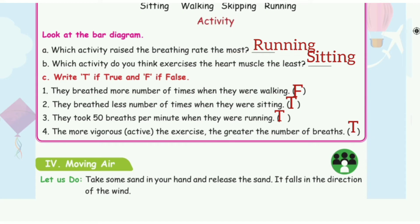Look at the bar diagram. A: which activity raises the breathing rate the most? The answer is running. Which activity do you think exercises the heart muscle the least? The answer is sitting.